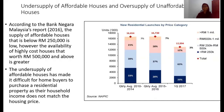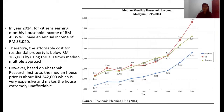Here is an example case study: in year 2014, for citizens earning a monthly household income of RM4,585, the annual income is RM55,020. Using the three times median multiple approach, the affordable cost for this citizen would be RM165,060. However, the median house price is about RM242,000, which is very expensive and makes the house extremely unaffordable.